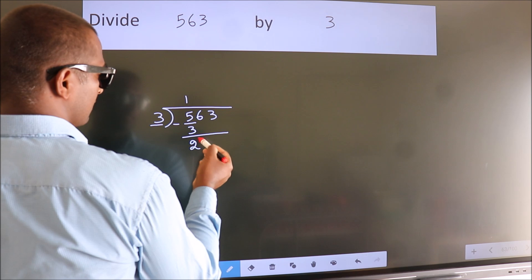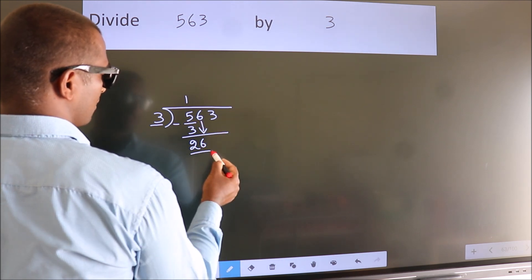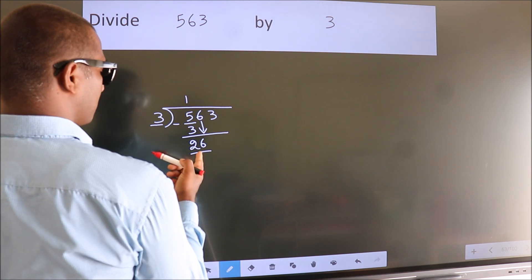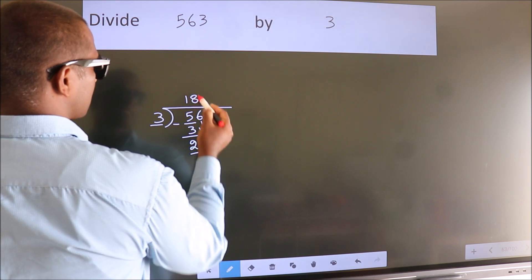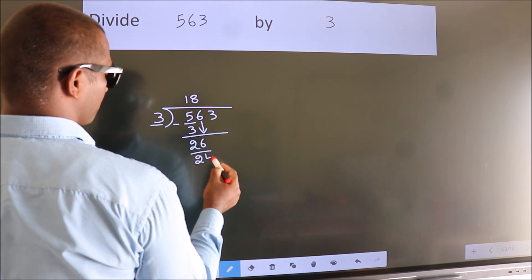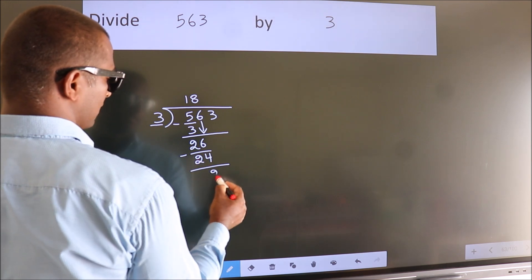After this, bring down the beside number. So, 6 down. So, 26. A number close to 26 in the 3 table is 3 times 8 is 24. Now, we subtract. We get 2.